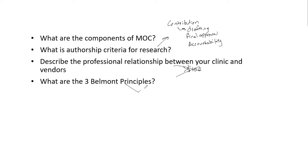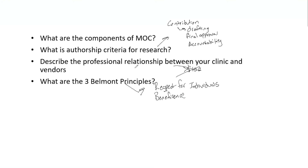The three Belmont principles are important to remember and be able to discuss in detail. First is respect for individuals — respecting their right to choose to be in a study or not, and what is best for them. Beneficence is next: maximizing results while minimizing risk. And finally, simply justice.